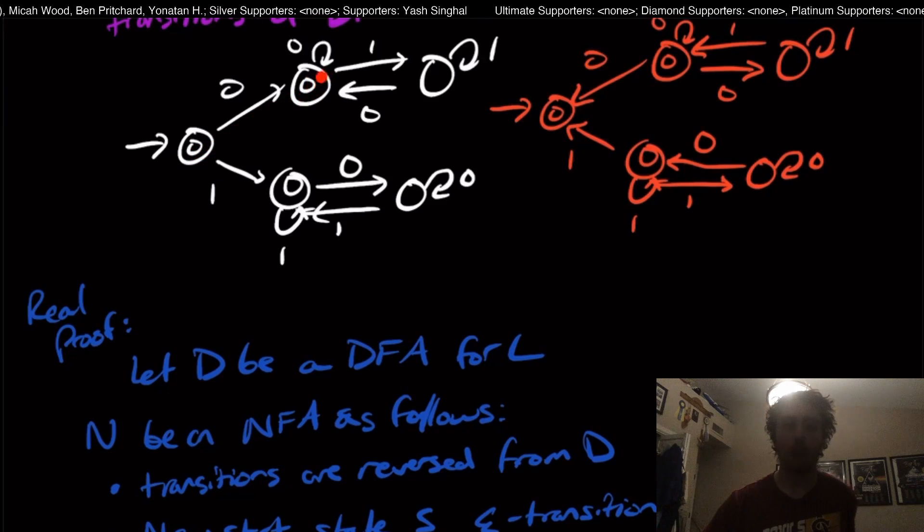So we're going to go from this new start state and it has epsilon transitions to all previously final states. And why do I say previously final? Now I'm going to say that the old start state of D is the only final state in this NFA that we're making. And why do we want to do that? Well, think about what the original machine did. It started in the start state and did some stuff and hopefully ended in the final state. Well, now if we want to do this in reverse order, what we want to do is we want to start in the final state and end in the start state.